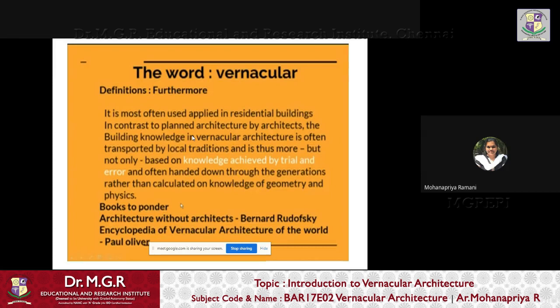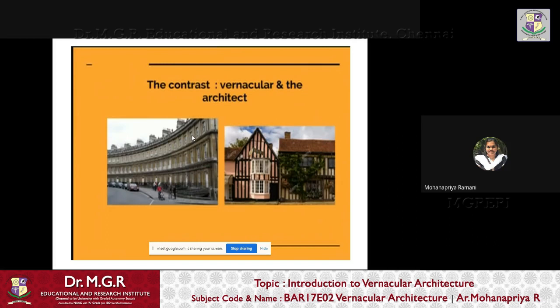Key books to study: 'Architecture Without Architects' by Bernard Rudofsky, and the 'Encyclopedia of Vernacular Architecture of the World' by Paul Oliver. These two important books help you understand the structure you can apply to study vernacular architecture. Moving on, we need to know the relationship between vernacular and architect. Consider two images — one on the left is British colonial architecture; the image on the right is vernacular architecture from England.